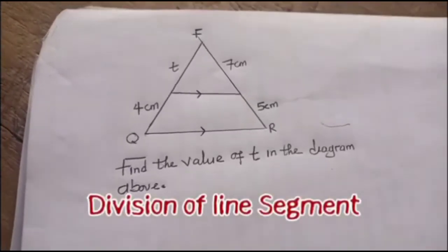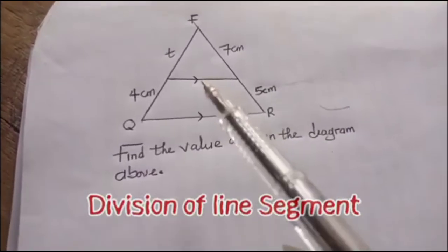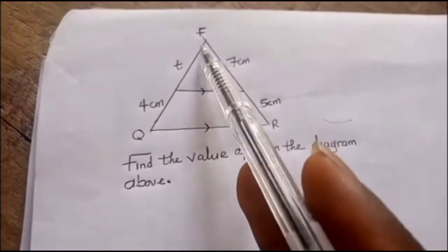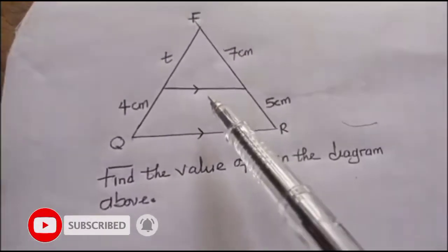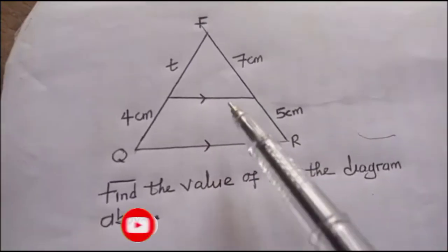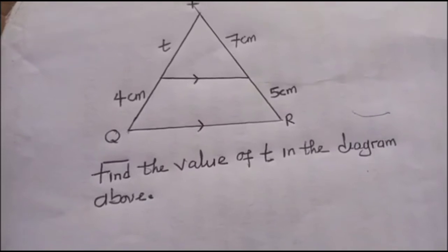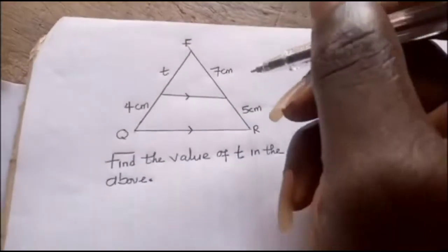We'll be talking about division of line segments using a triangle. You can see this diagram is having a triangle FQR, and we're having two parallel lines. So we can find the value of t in the diagram above.